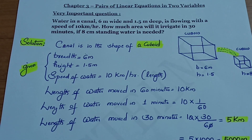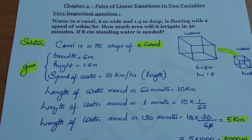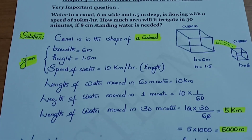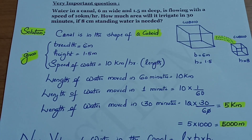One hour is 60 minutes. Length of water moved in 60 minutes is 10 km. Length of water moved in 1 minute is 10 × 1/60. Length of water moved in 30 minutes is 10 × 30/60.